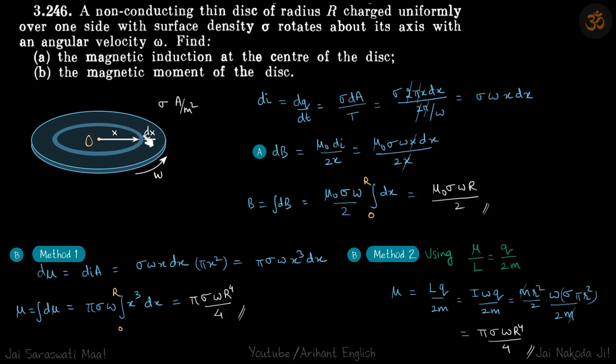Let's take a small ring of width dx at a distance x. We will calculate the field and magnetic moment because of this elemental ring, then integrate x from 0 to r to get the total field and total magnetic moment.